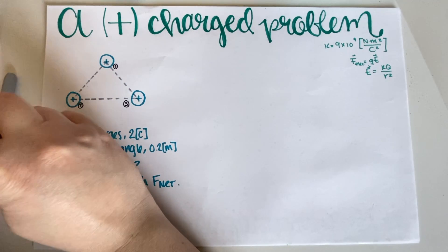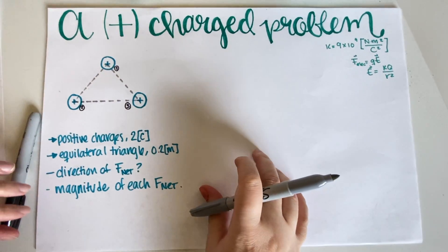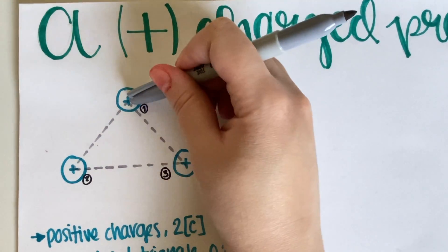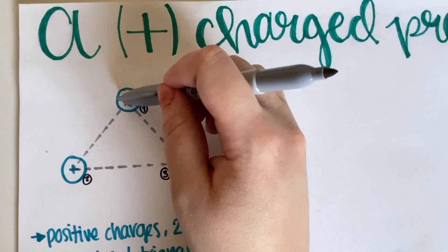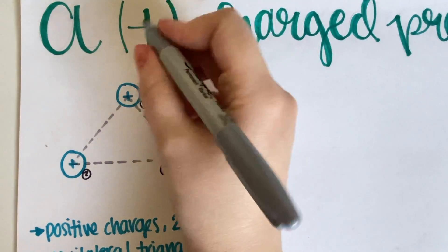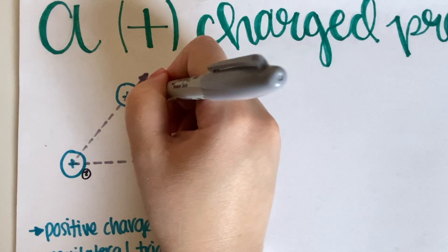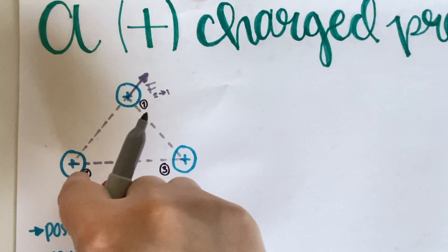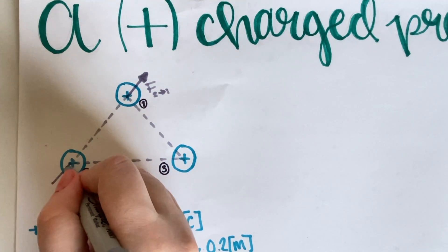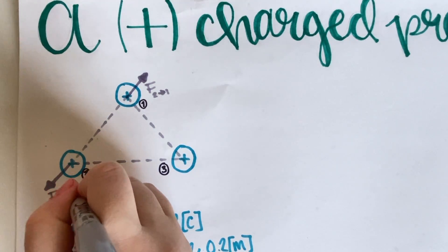All three charges are positive and we have to draw the direction of the net force. This goes back to Physics 7B, because these are forces. We'll start by looking at the picture and the direction of the forces. Charge 1 feels a force due to charge 2 and another force due to charge 3. Since both are positive they repel each other, so charge 1 feels a force from charge 2 — this is F of 2 on 1. By Newton's third law, there is an equal and opposite reaction: charge 1 on 2.